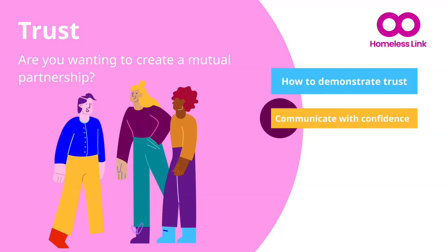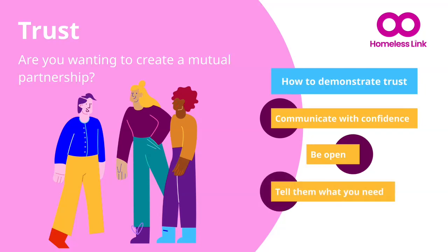Be open about where you are as a charity. If you have problems with annual returns, tell them about it, but reassure about the action you have taken or are taking. If you are testing something, state that. And if the bid involves a new partnership, talk about why it is important and what you will do to make it work. And tell them what you need. Do not second guess what they want to hear or how much they want to give. Give the full budget you need and ask for it. Be clear what will happen if you don't get all that you are asking for. Your funding model is really important here.